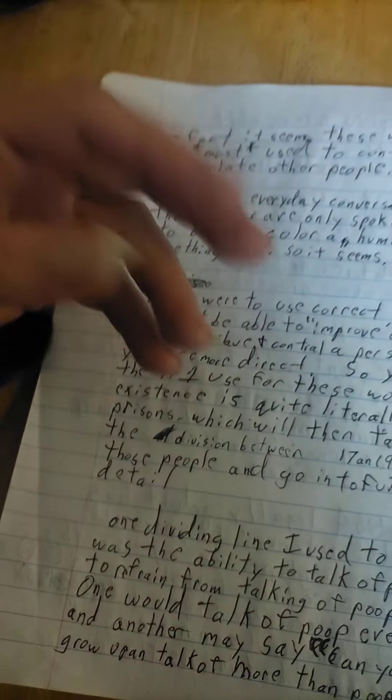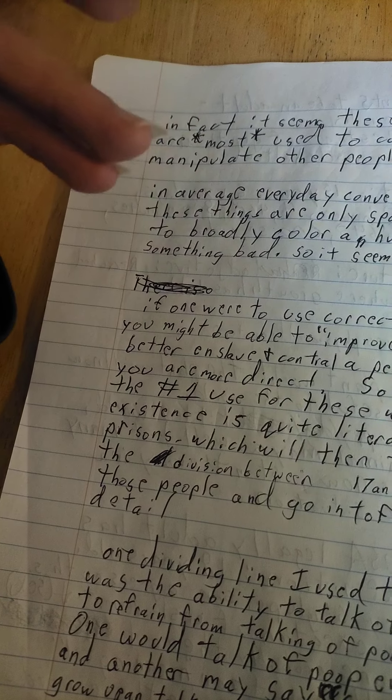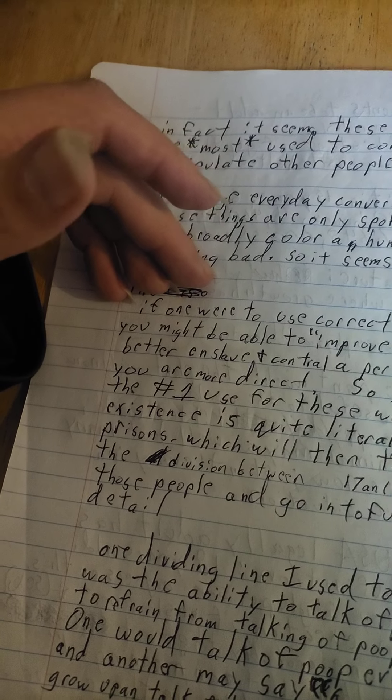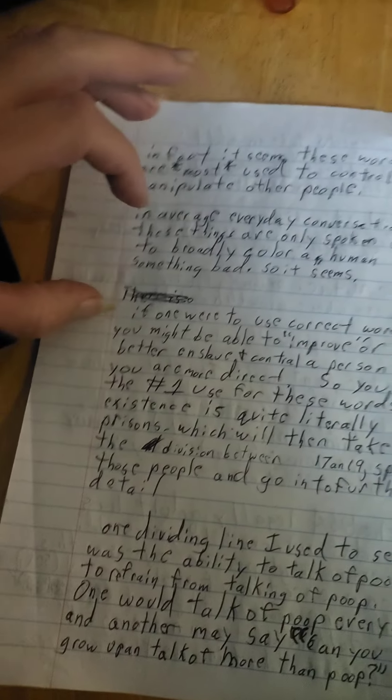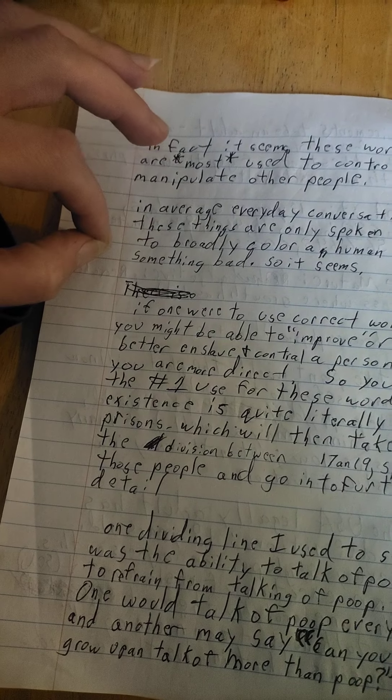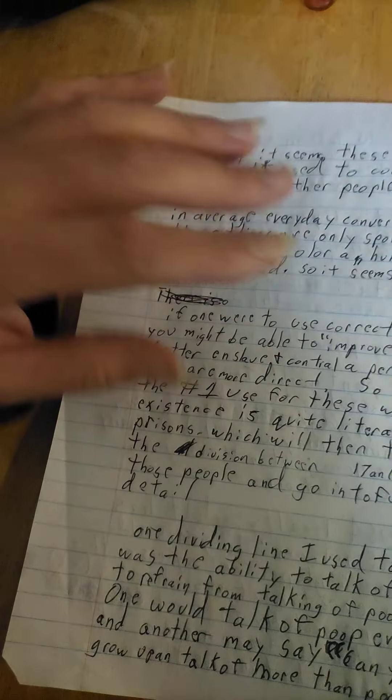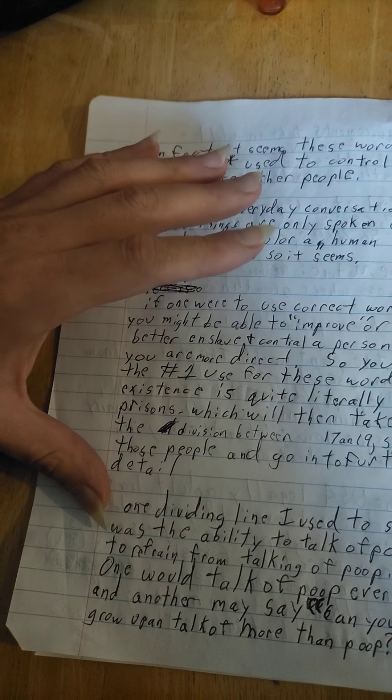Like if someone's jumping around, you might not say stop jumping around, you might say stop acting like a child. Someone's playing with poop, you might not say stop playing with poop, you might say stop acting like a child. But when it gets into less specific stuff than that, that's where it really doesn't happen.